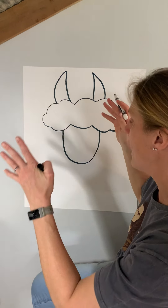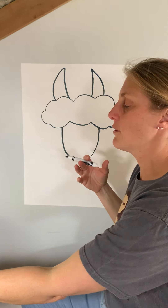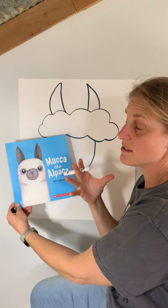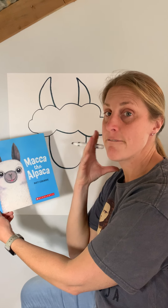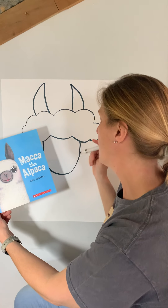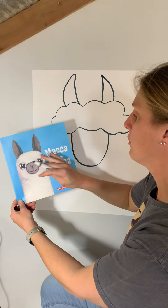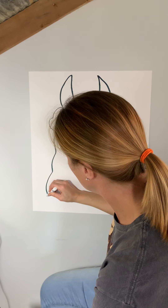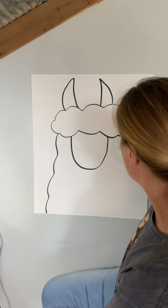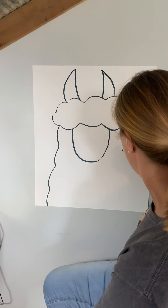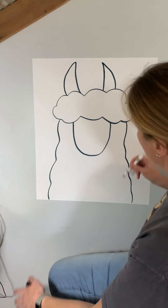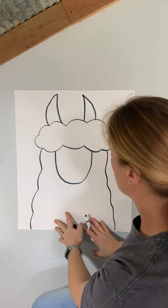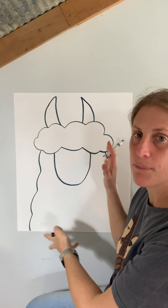Now we're gonna do the alpaca's head and neck. If you look at the book, it's actually kind of hard to see where the head stops and the neck starts because alpacas, especially this time of year, have a lot of fur — they're very furry and fuzzy and puffy. So it'll be just a curvy line going all the way down the paper. I'm gonna come over to the side of my cloud and make this curvy line — that's the fur around my alpaca's face and the fur around his neck.